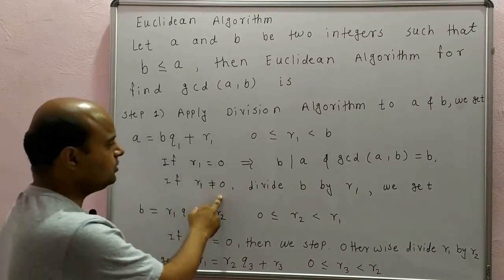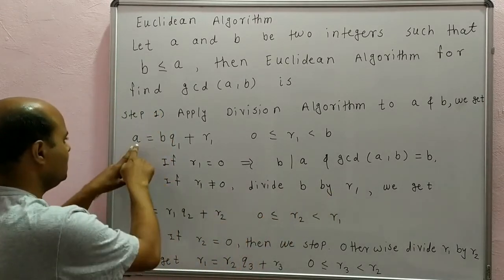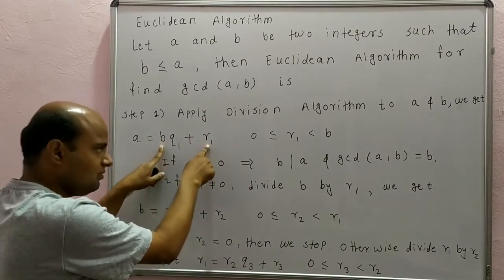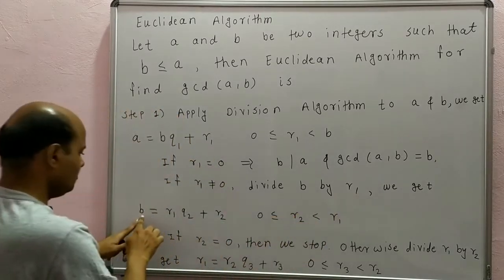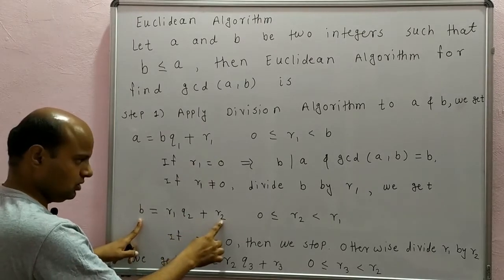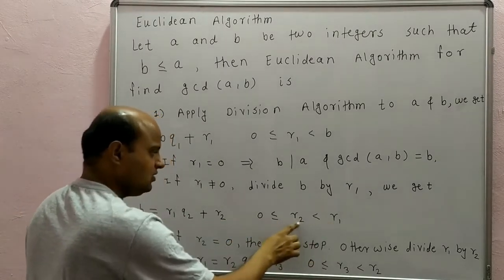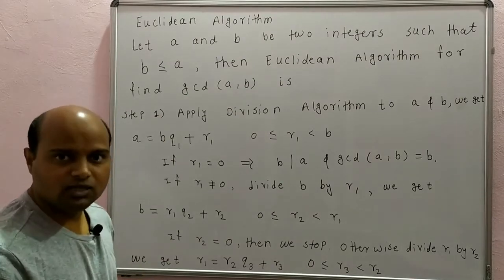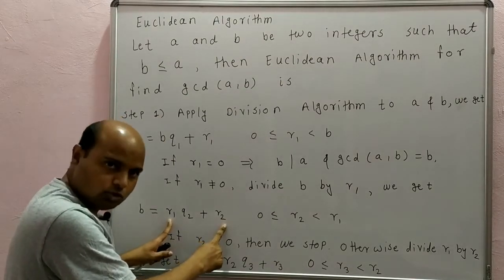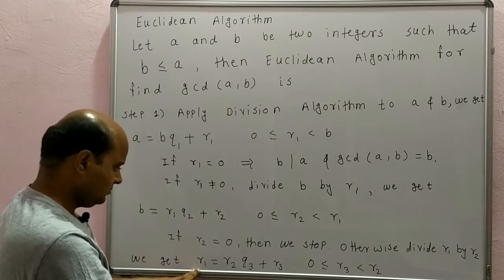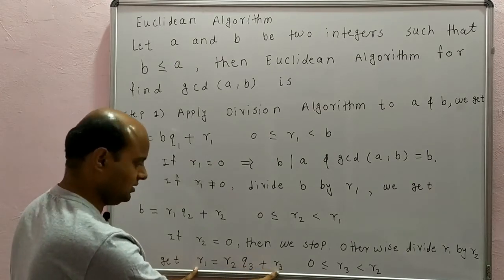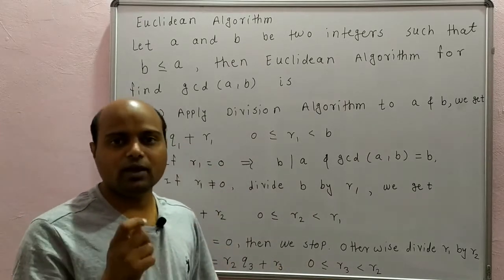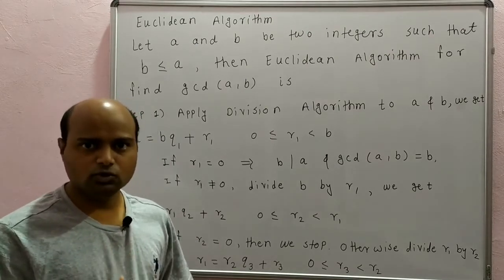But if R1 is not equal to 0, then we have to divide B by R1. We get B equal to R1·Q2 plus R2, where 0 ≤ R2 < R1. If R2 is 0, we stop. If R2 is not 0, we apply the division algorithm again to R1 and R2, getting R1 equal to R2·Q3 plus R3, where 0 ≤ R3 < R2. We continue this process until we get 0 as a remainder.